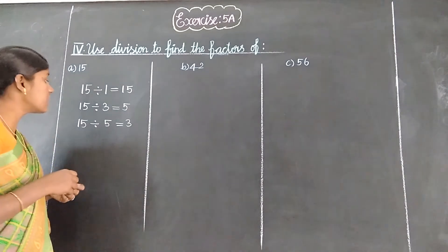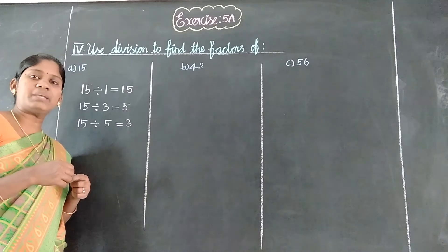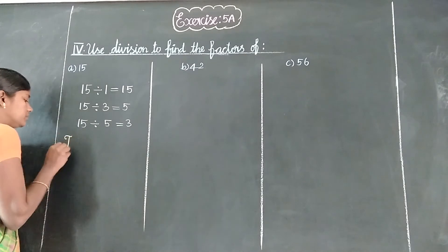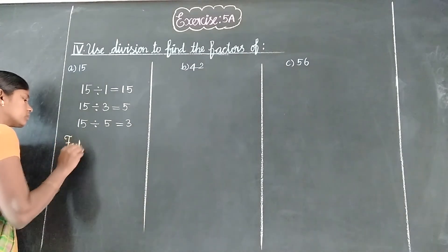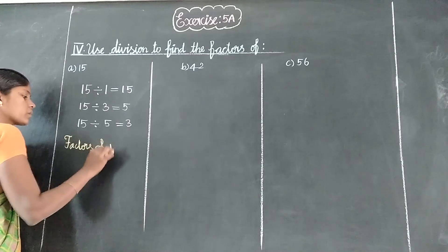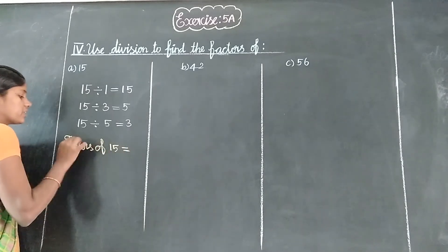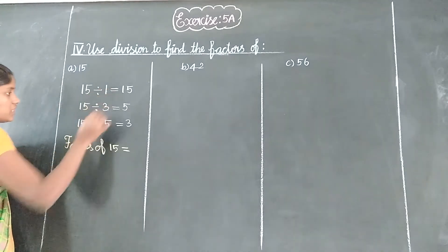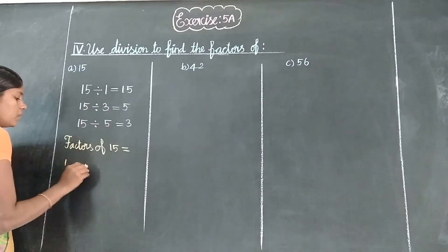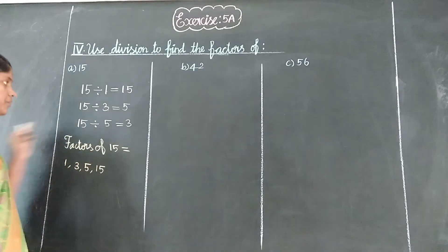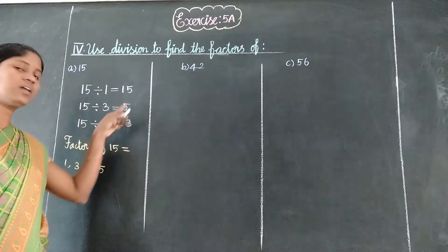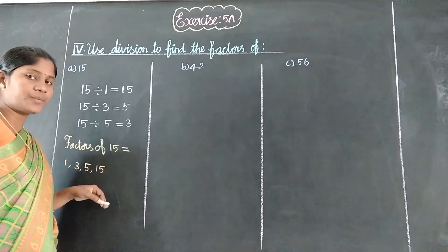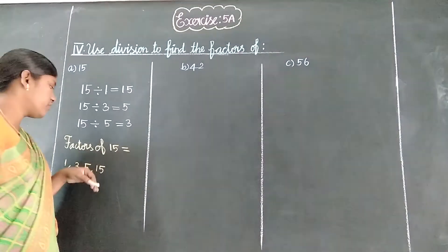Now next to the final answer. So that is the final answer. Factors of 15 equal: 1, 3, 5, and 15. So 1 × 15 is equal to 15. 3 × 5 is equal to 15. So 1, 3, 5, 15 — factors of 15.